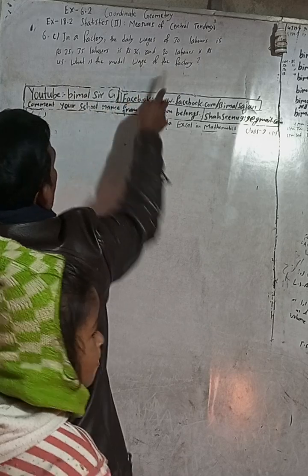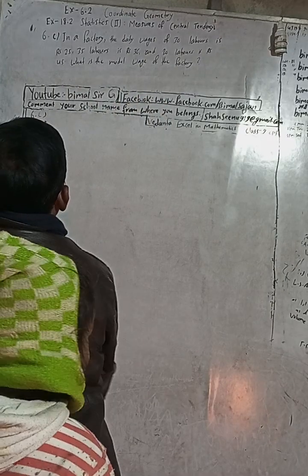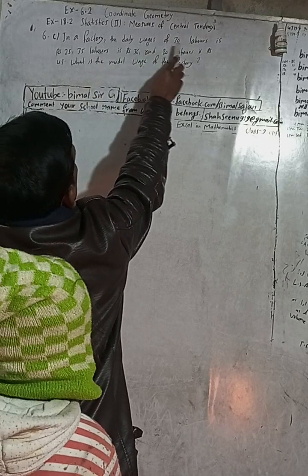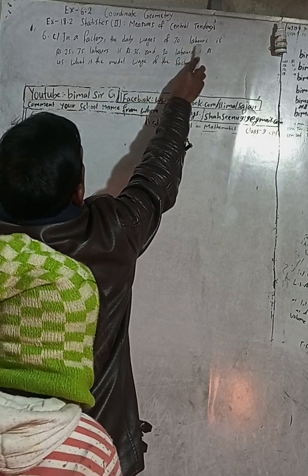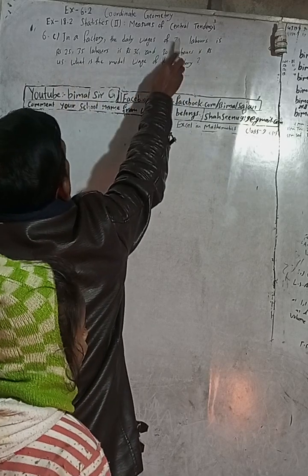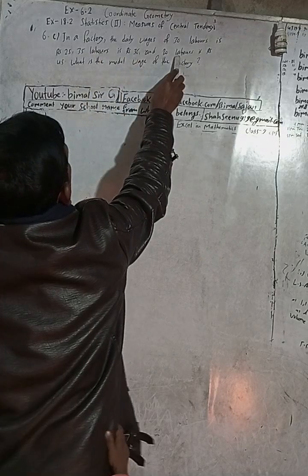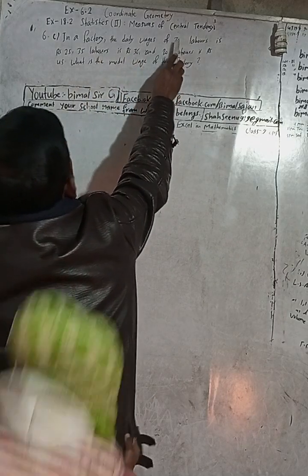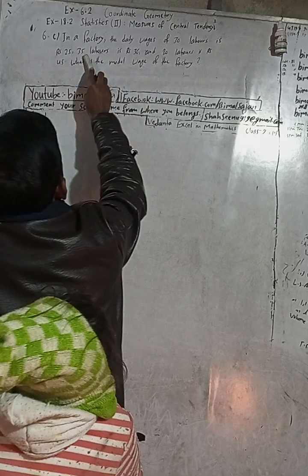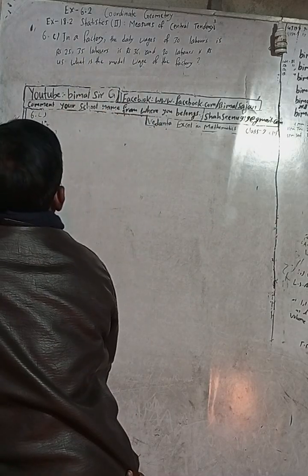The question asks: what is the modal wage of the factory? We can see the frequencies are 30, 35, and 20. We need to identify which is the highest frequency. Looking at the values, 35 is the highest frequency.